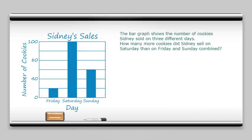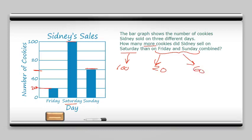Good job. Now let's try one with a bar graph. We want to know how many more cookies were sold on Saturday than Friday and Sunday combined. Saturday's bar goes all the way up to 100 — easy. On Friday, the bar is between zero and 40, so that must be 20. On Sunday, the bar is between 40 and 80, so that's 60. To combine Friday and Sunday: 20 plus 60 is 80. How much more is 100 than 80? We subtract, and that tells us the answer. And just like that, you know how to do picture and bar graphs! Why don't you try a few of those on your own?